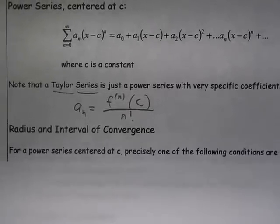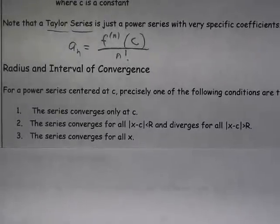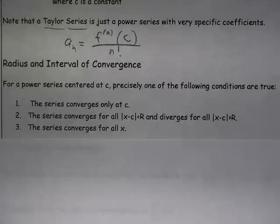So it's going to be one of these three. We talk about precisely one of the following conditions are true. The series might converge only at one value. In other words, the only place that we can get a good approximation from our power series is right at the value that we centered on.